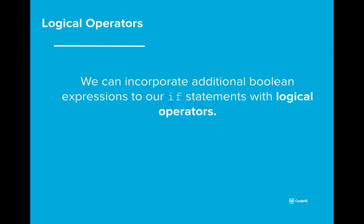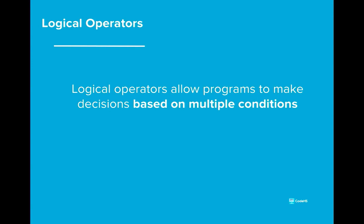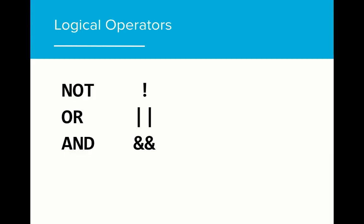We can achieve this implementation by adding another Boolean expression to our if statement using logical operators. Logical operators allow programs to make decisions based on multiple conditions. In our example, we would like password strength to print good if the length of the password is greater than 8 and the password starts with a pound sign. This requires us to connect multiple conditions together in one if statement. These are the different logical operators that can be used in conditional statements. Let's explore how each of these can be used.